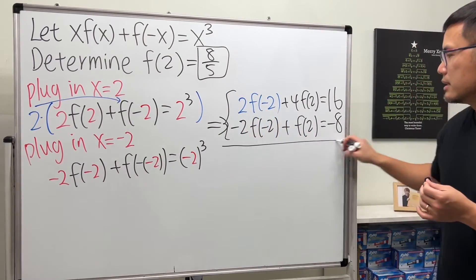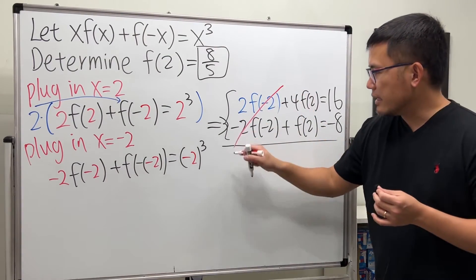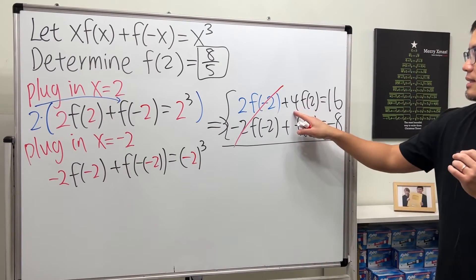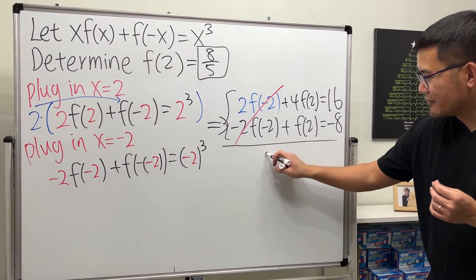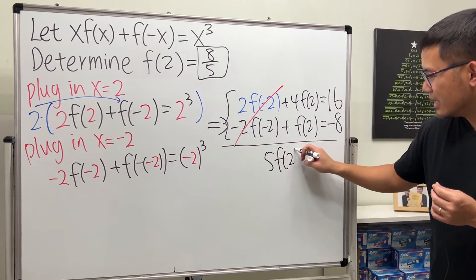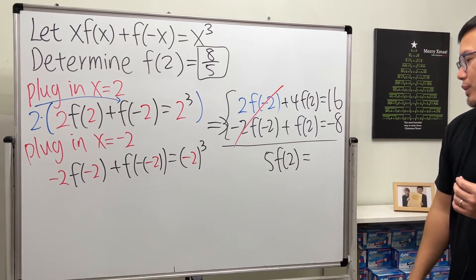Now look at these equations, add them up. They can solve very nicely. This is 4f(2) plus one more, so we have 5f(2), and when we add them we get 8.